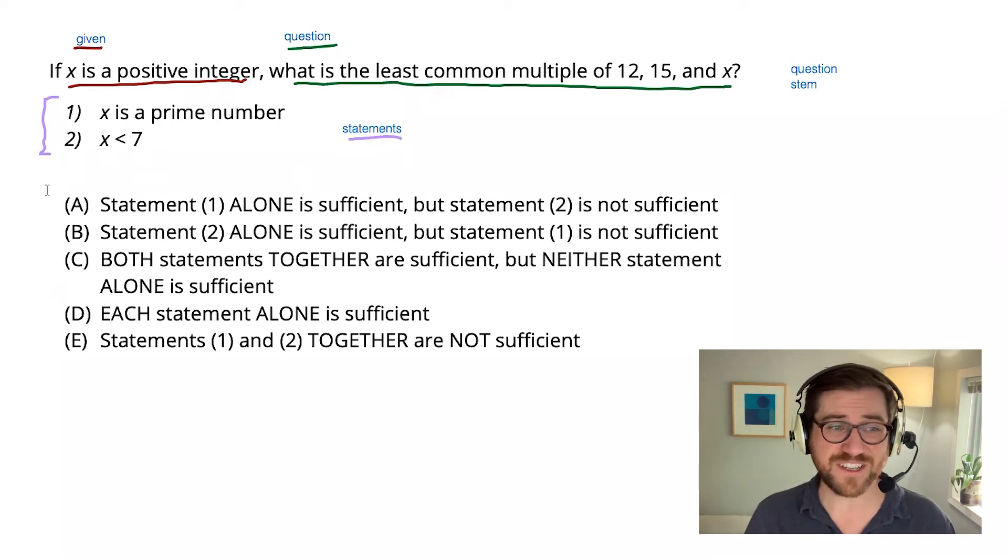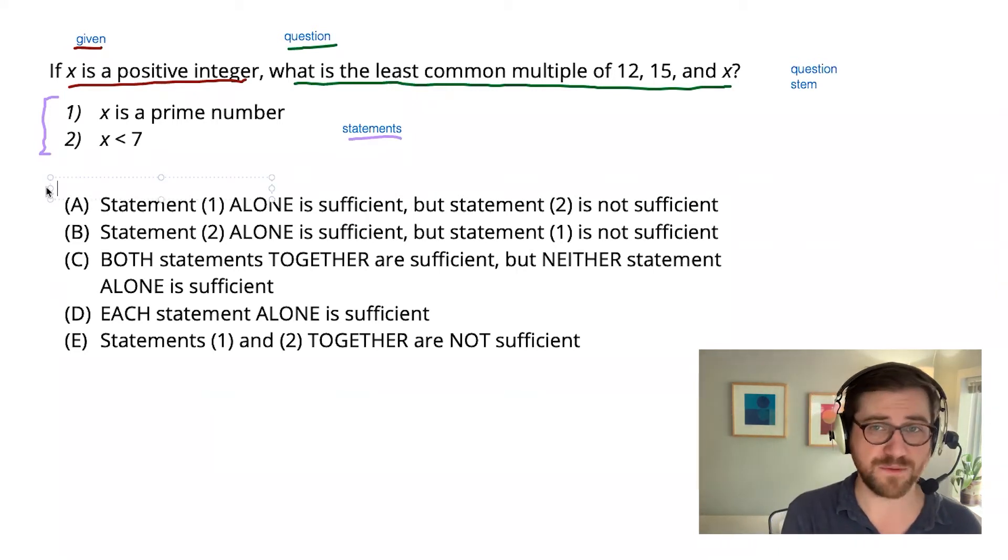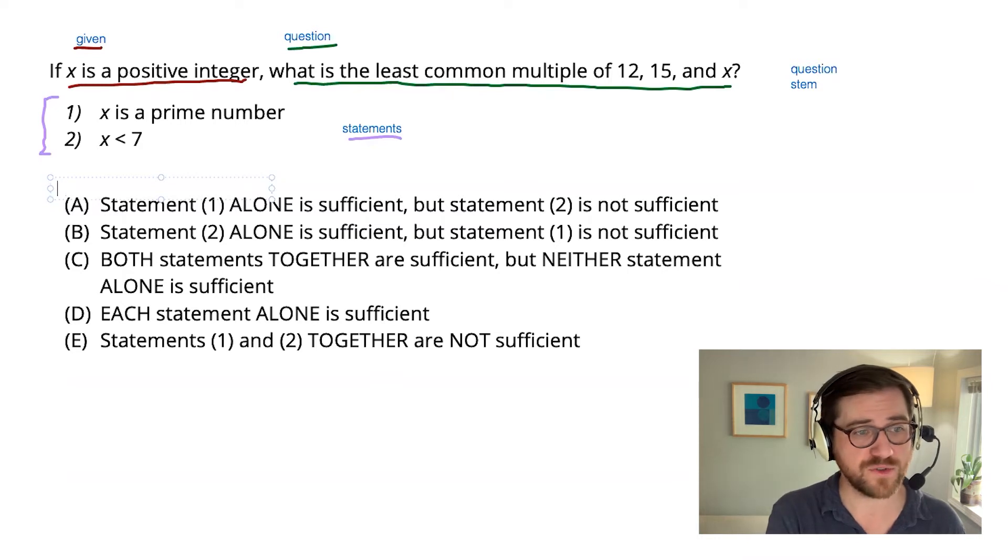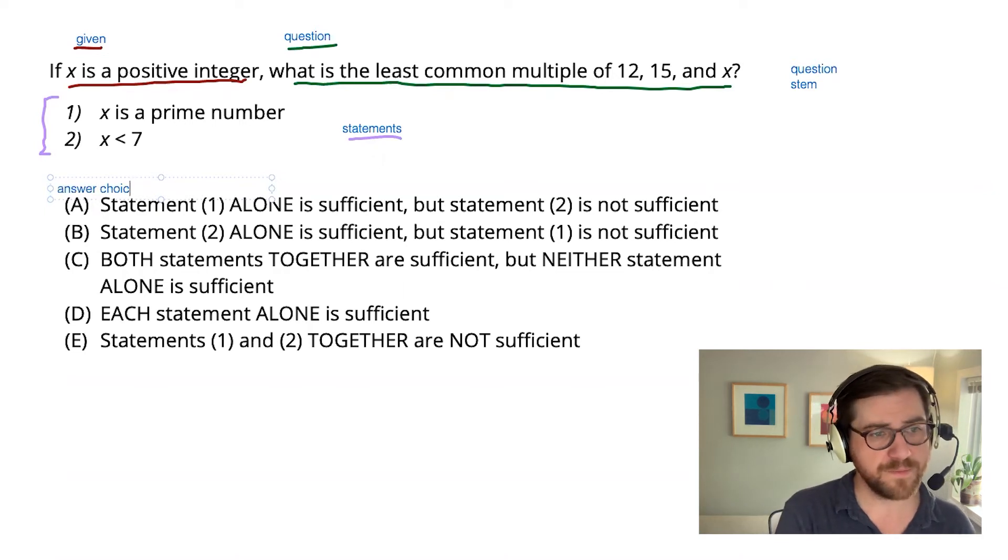Finally, we have the answer choices. And these are consistent across all data sufficiency problems. It's exactly the same wording, exactly the same order of the answer choices. So ultimately what you're trying to do is decide which of these is going to be correct.